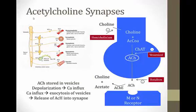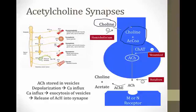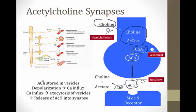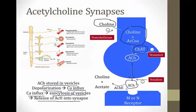Zooming in on acetylcholine synthesis: choline is transported into the neuron and reacted with acetyl-CoA to form acetylcholine, which is packaged into vesicles by choline acetyltransferase (ChAT). When the neuron depolarizes, vesicles fuse with the membrane and exocytosis releases acetylcholine into the synaptic cleft. Depolarization triggers calcium influx, which causes vesicle exocytosis. In the synapse, acetylcholine is broken down by acetylcholinesterase back into choline and acetate, with choline potentially recycled.